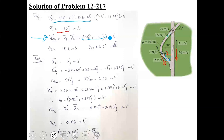This gives us the vector vBC — its magnitude and direction. That covers the relative velocity of B with respect to C. Any questions on that? Good, let's move on.